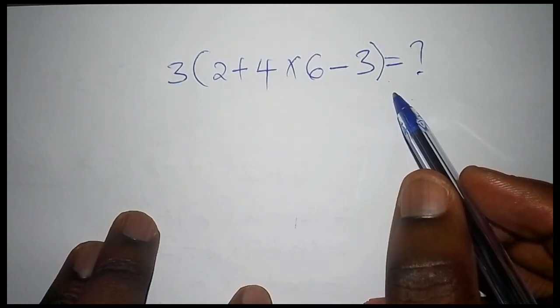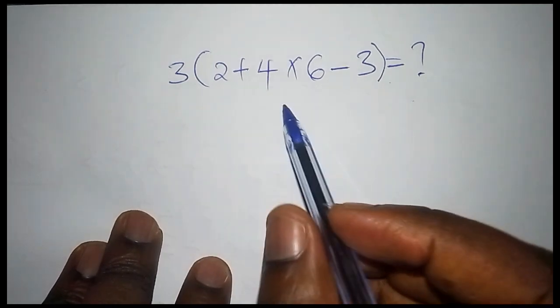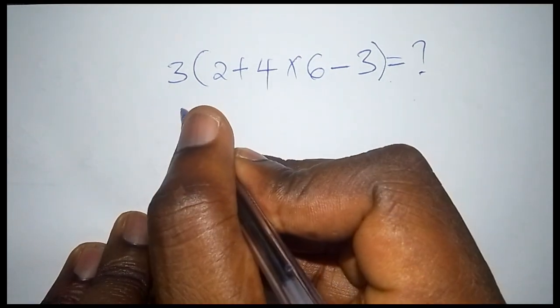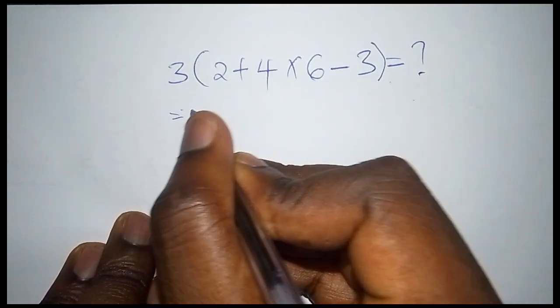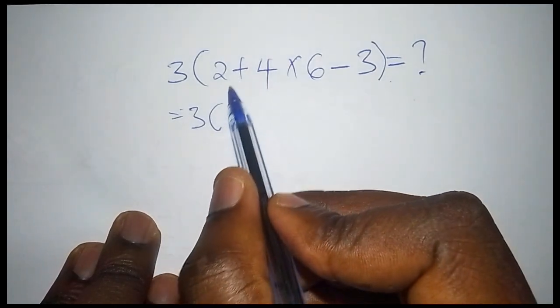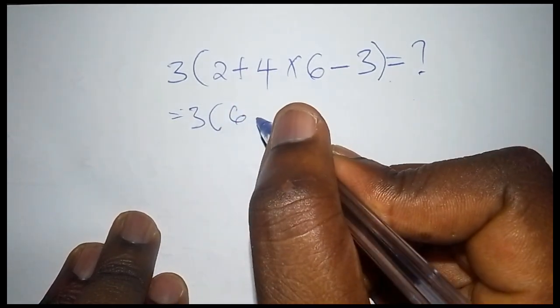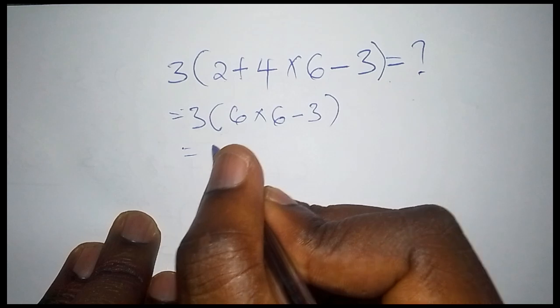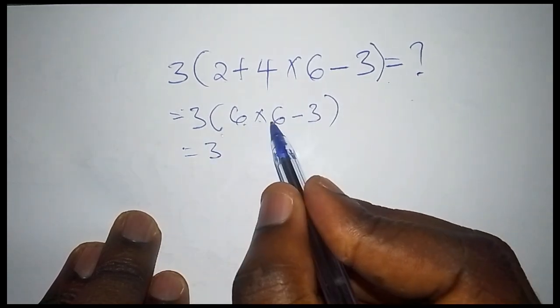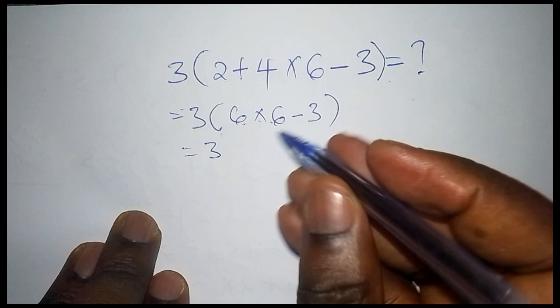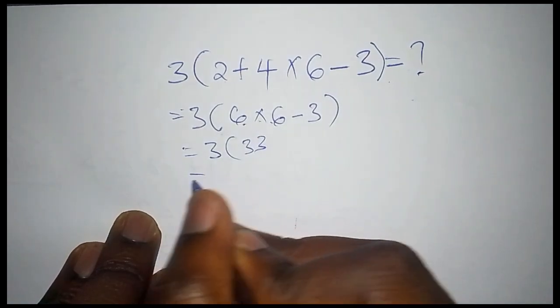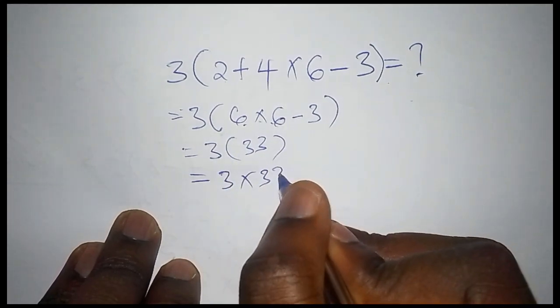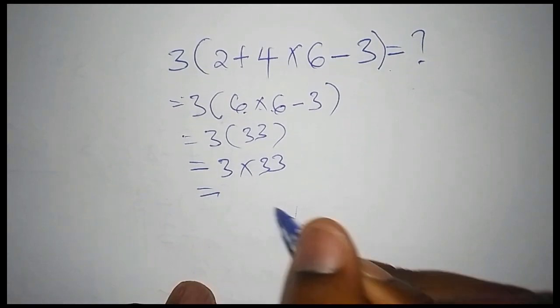For example, don't try to do this by saying this one is equals to 3 into bracket, then here we shall have 2 plus 4, then you say it's 6, then 6 multiply by 6 subtract from 3. Then from there now you can say that here we shall have 3, then 6 times 6 is 36, that 6 minus 3 is 33, then 3 into bracket 33. So once you do this, then you try opening the bracket and multiply 3 multiply by 33. The answer that you shall get is 99 because 3 multiply by 33 is 99.